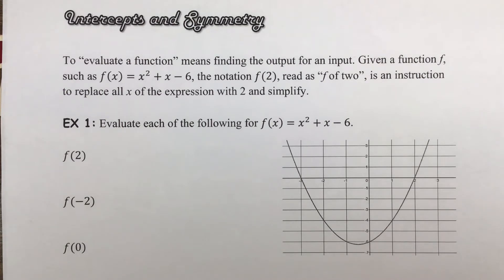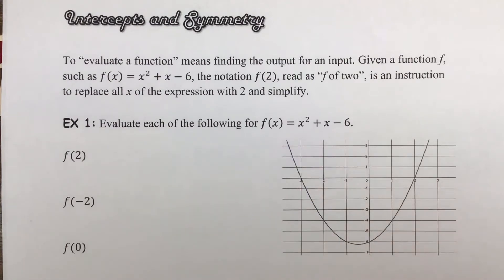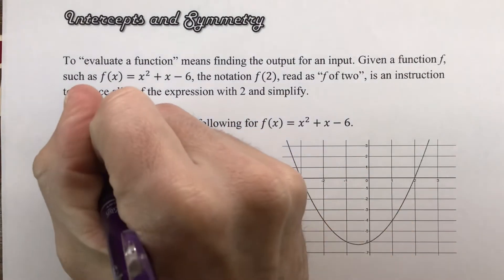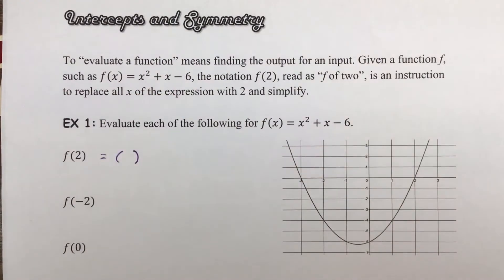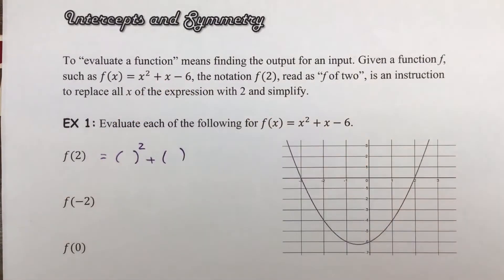As a suggestion that might sound a little bit silly at first, a way that you can do this would be to write the expression but wherever you have an x, create a set of parentheses. So it would look like this: I'd have parentheses for that x, which are going to get squared — the parentheses replace the x — plus parentheses, minus 6. That then gives me a place to substitute the 2 in.